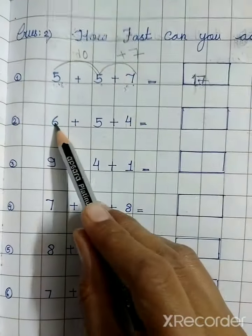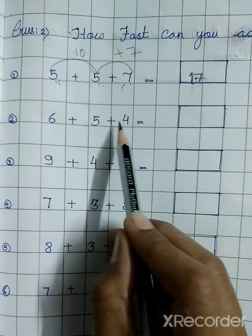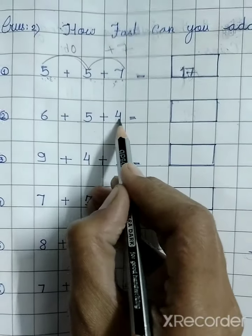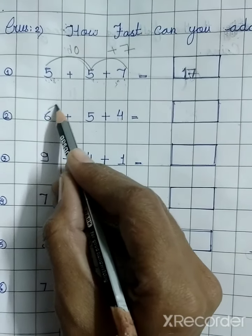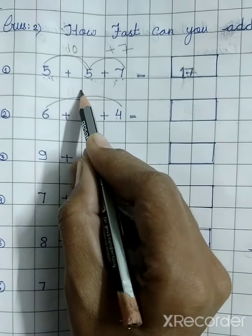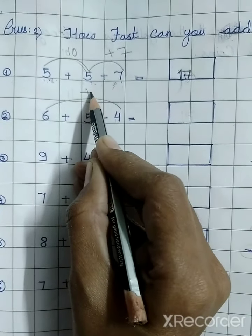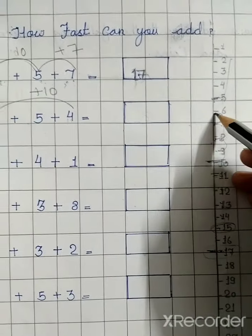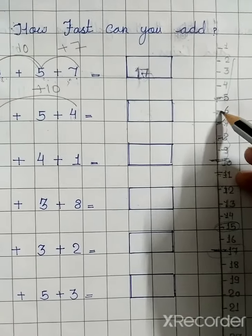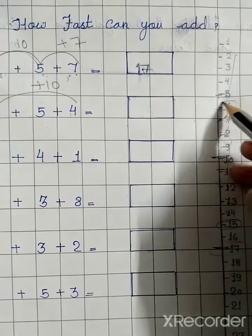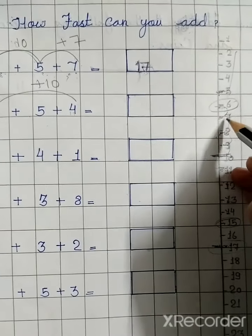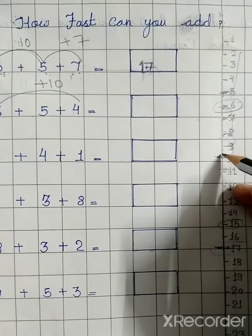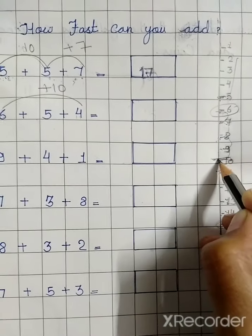Next we have 6 plus 5 plus 4. We can do this using the make-ten strategy: 6 plus 4. Our first number is 6 — we go to that position on the scale and move 4 steps forward: 1, 2, 3, 4. What do we get? 10.